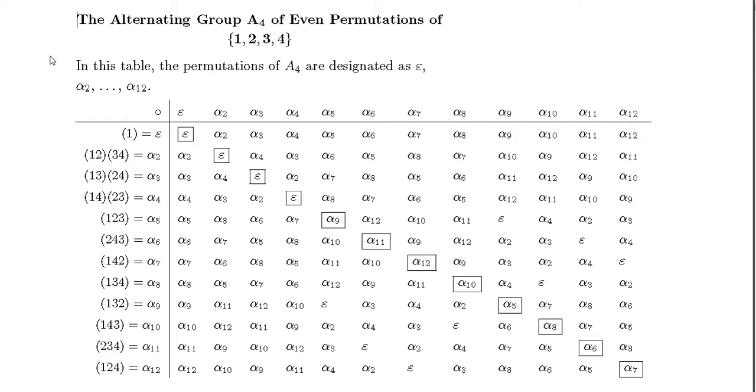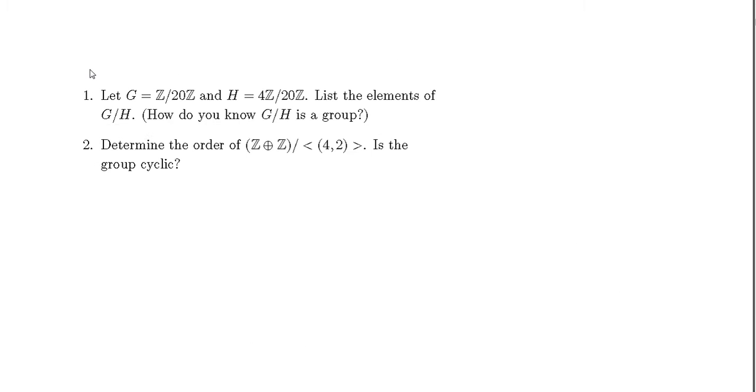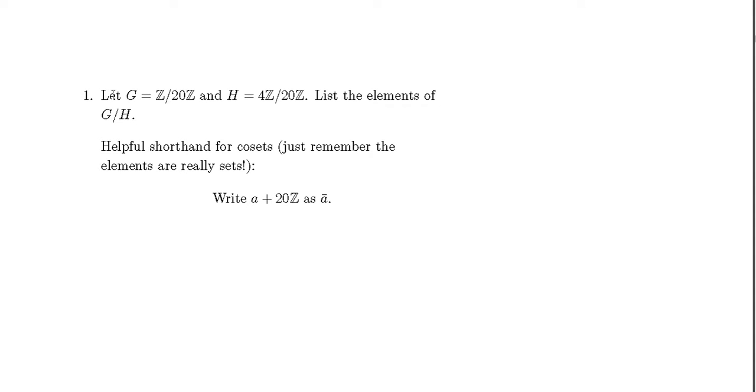This is a huge table, takes some time to do it, but it's quite intuitive. So we get directly into the questions. Two questions here. First one: Let G be this factor group Z/20Z and H be 4Z/20Z. First, list the elements of the division group, and how do you know that this division group is a group? We will get into the second one later. Let's get focused on this one.